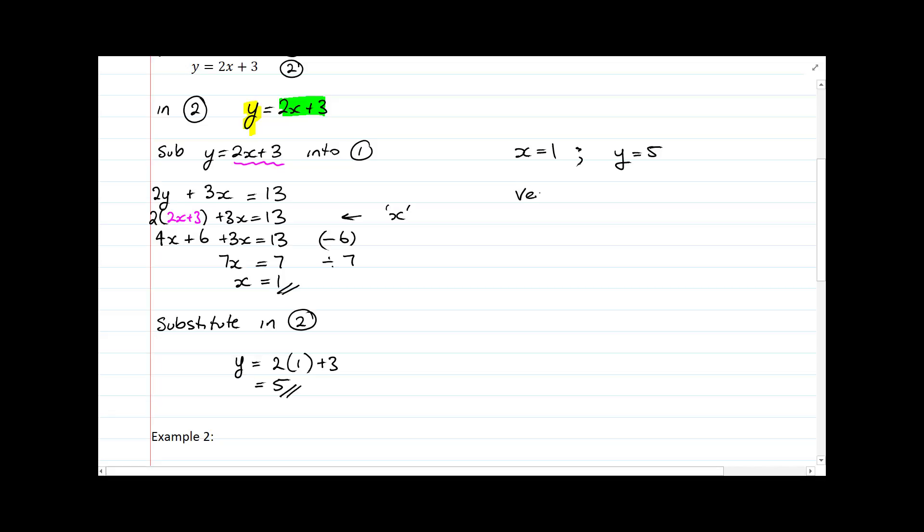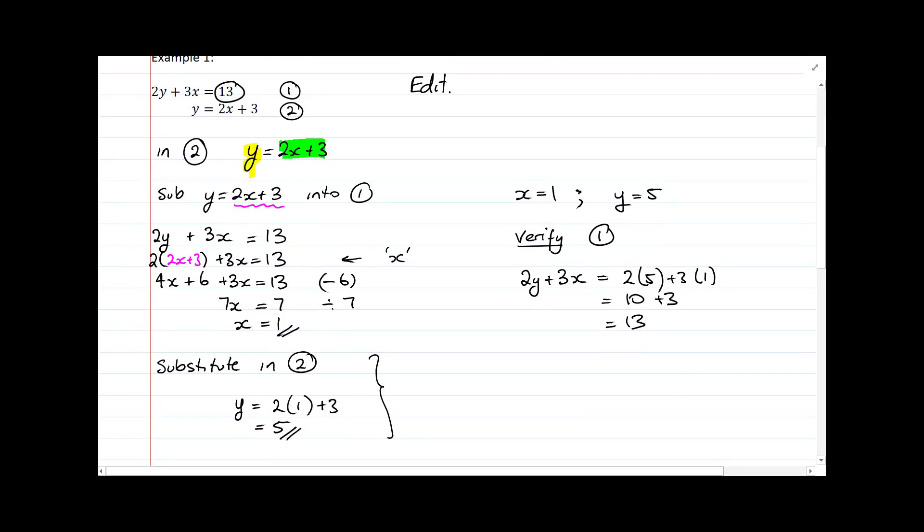And now I'm going to verify that solution which is the last thing you should do in each case. My verification. Notice that I used equation number 2 to get my y value given my x value, so I'm going to verify into equation number 1. And equation number 1 is 2y plus 3x on the left hand side. And that will be equal to 2 times 5 plus 3 times 1 which is 10 plus 3 which is 13. And 13 is what I was hoping would equal to because that's what the original equation had. So there it is, a solution to example number 1 using substitution where my substitution happened in this point right here. And I substituted in 2x plus 3 for my y value and was able to solve then.